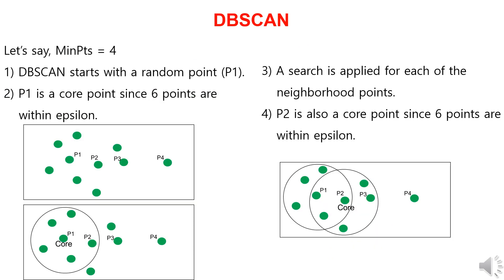Now let's take a look at how clustering is formed through DBSCAN. Assuming we have set the minimum points to four, we start by randomly selecting a data point. Let's call it P1. Using P1 as the reference, we create a circle with an epsilon radius and find six points within it.